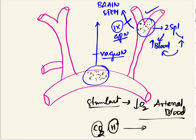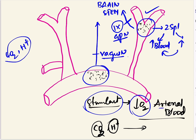For central chemoreceptors, the primary stimulant is carbon dioxide and hydrogen ions. For peripheral chemoreceptors, the primary stimulant is decreased oxygen content in the arterial blood, with carbon dioxide and hydrogen ions playing a lesser role. Compared to central chemoreceptors, peripheral chemoreceptors stimulate ventilation much more rapidly.